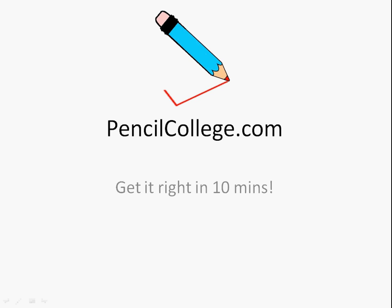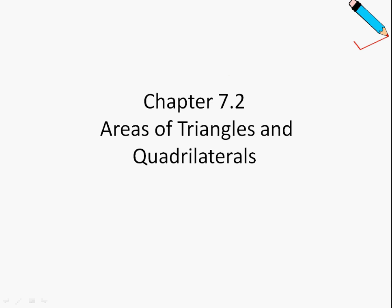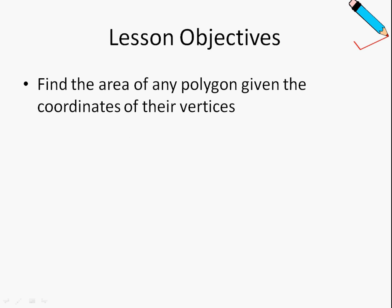Hi guys, welcome to Pencil College. In today's video, we'll be looking at chapter 7.2. Specifically, we'll learn how to find the areas of triangles and quadrilaterals. So let us look at their lesson objectives. We will be learning how to find the area of any polygon given the coordinates of their vertices.